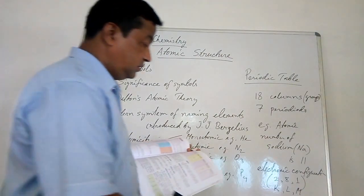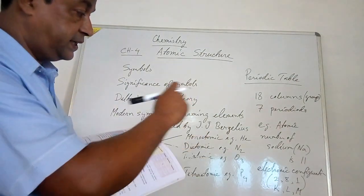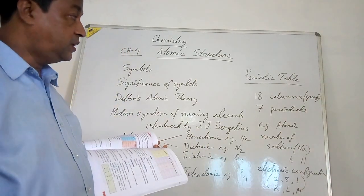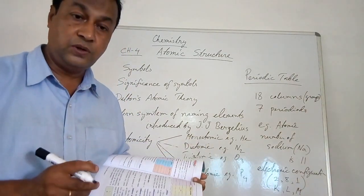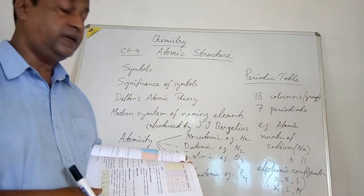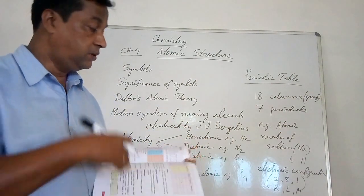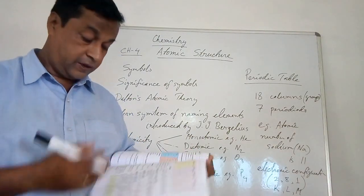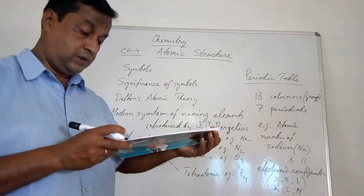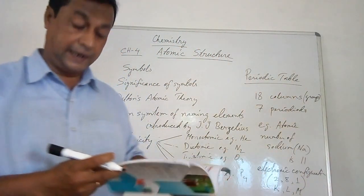The outer shell, which is the M shell, has 1 electron and is known as the valence shell. From this outer shell, you can find the valence of the element. Sodium has 1 electron in the outer shell, so its valence is +1, meaning it will give out one electron to achieve the configuration of a noble gas. This outermost electron is known as the valence electron.